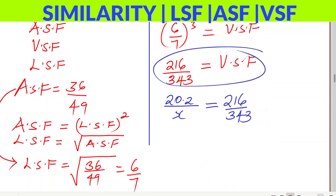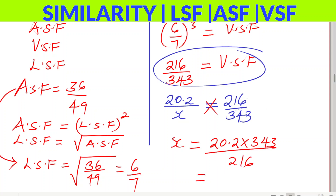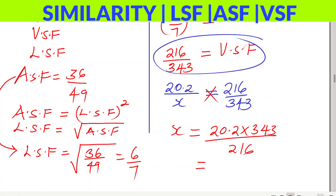To get x, cross multiply: x = 20.2 × 343 ÷ 216. Working this out on a calculator gives 32.08 cm³. That is how you get the volume of the larger sphere.